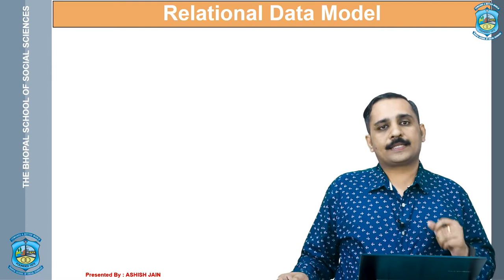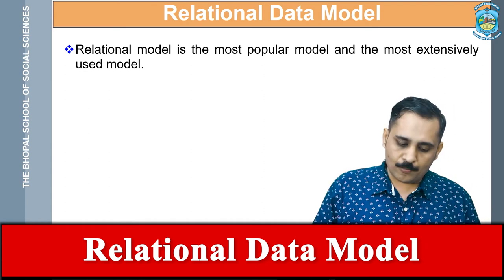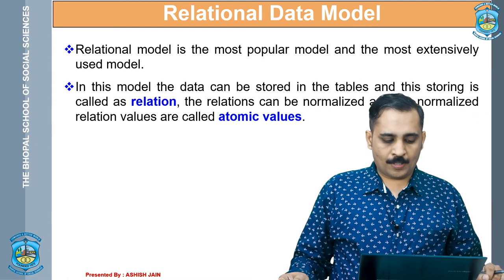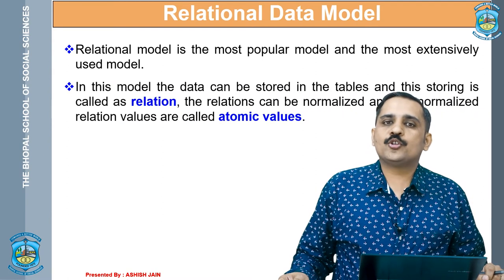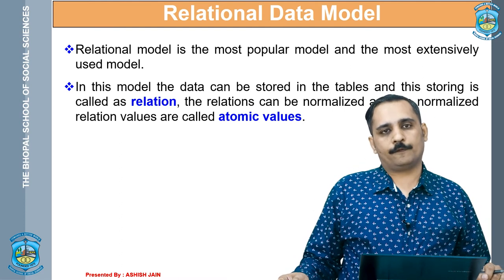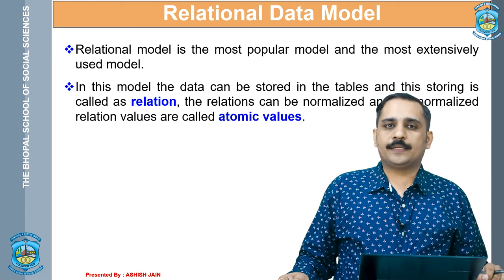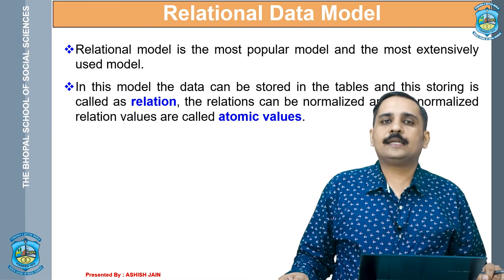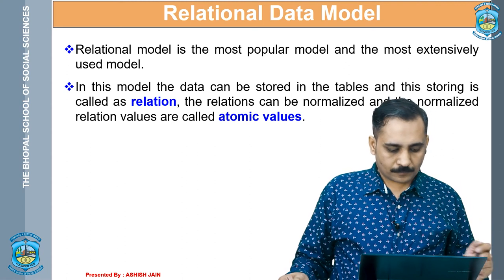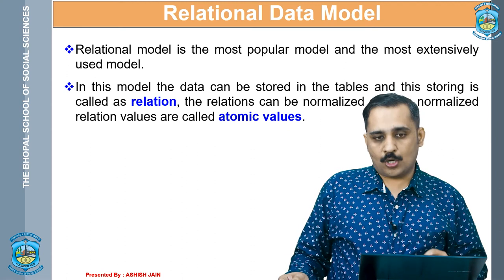Now the next and most important model is the relational data model. A relational data model is the most popular and extensively used data model. In DBMS terms, relation means table. So if you represent data in a tabular manner, this model is known as the relational data model. Most of the databases we see and work with have tabular representation of data, so in a sense we use the relational data model. This model stores values in tables, and the storing is called a relation.